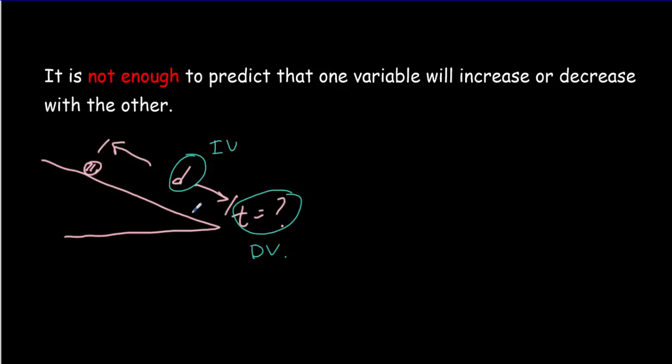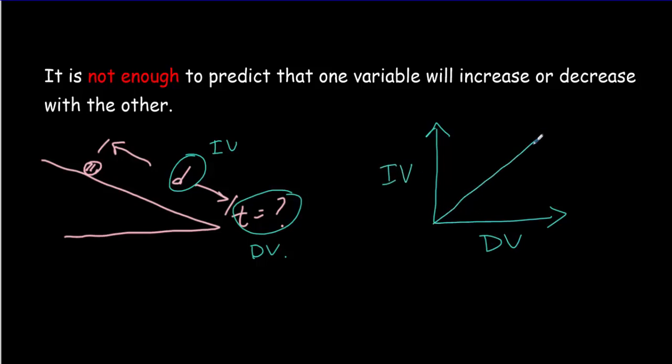Everybody knows that time increases with distance, so it's not a worthwhile experiment on its own. However, if you can predict the shape of that graph — say, a proportional relationship where doubling the distance doubles the time — then you've got something to compare your results to. That's going to give you much more interesting things to say in your evaluation section. So predicting a shape to your graph is very important.